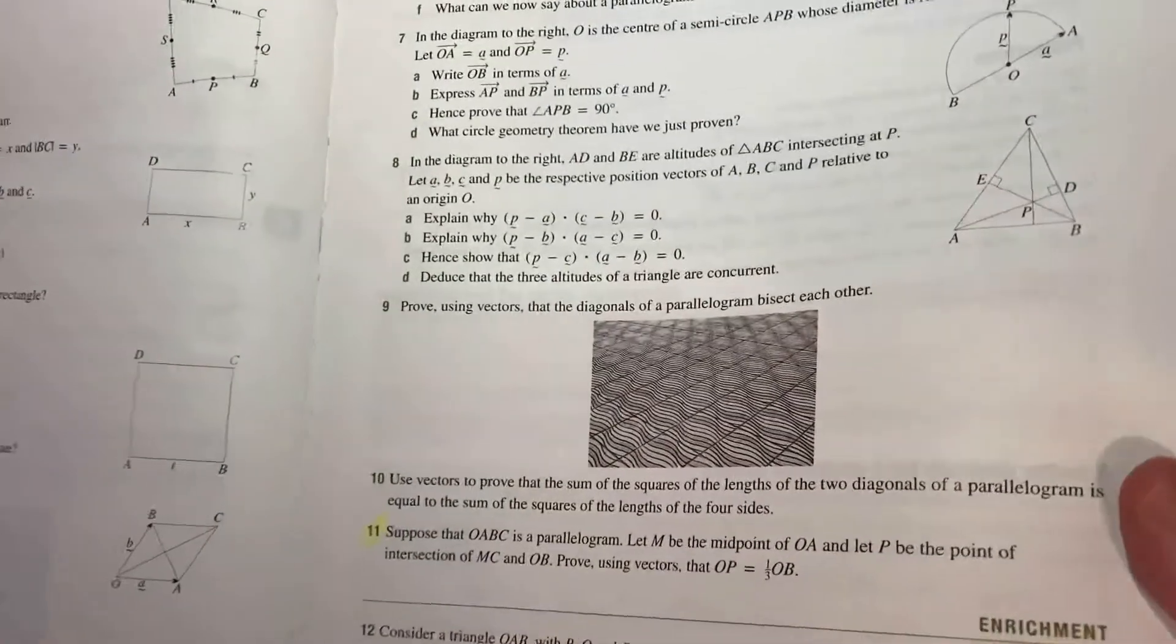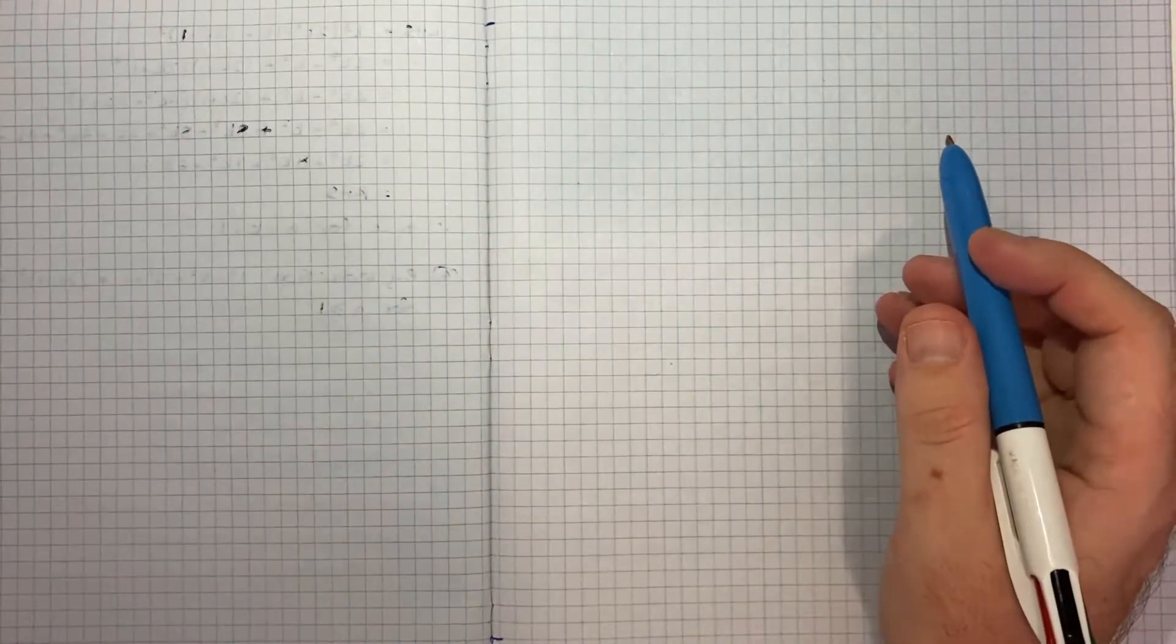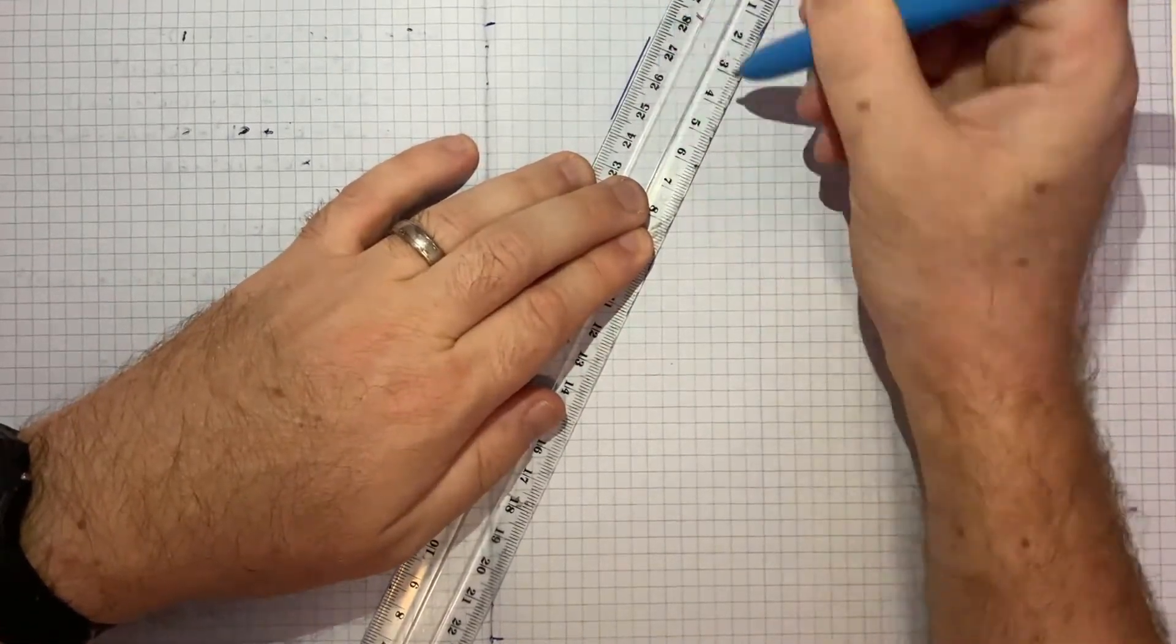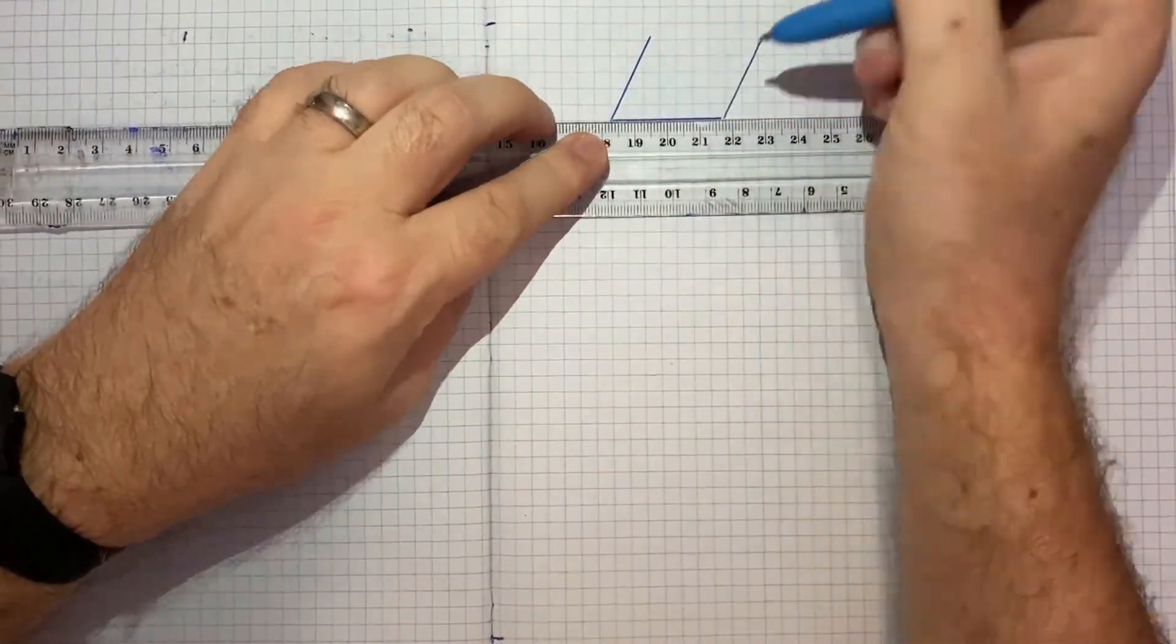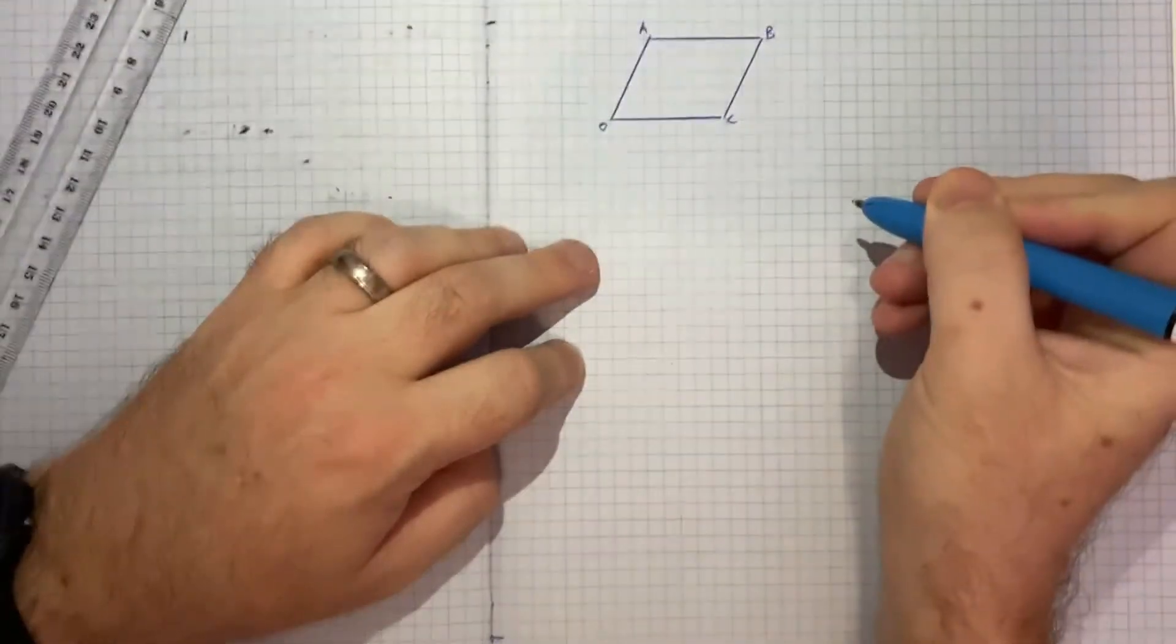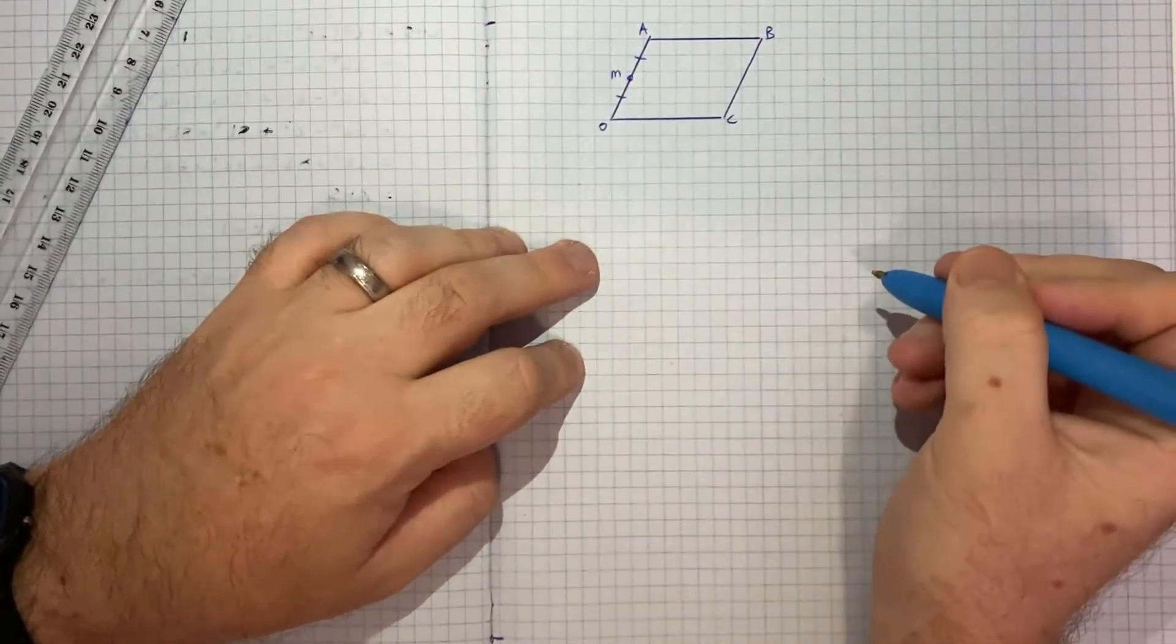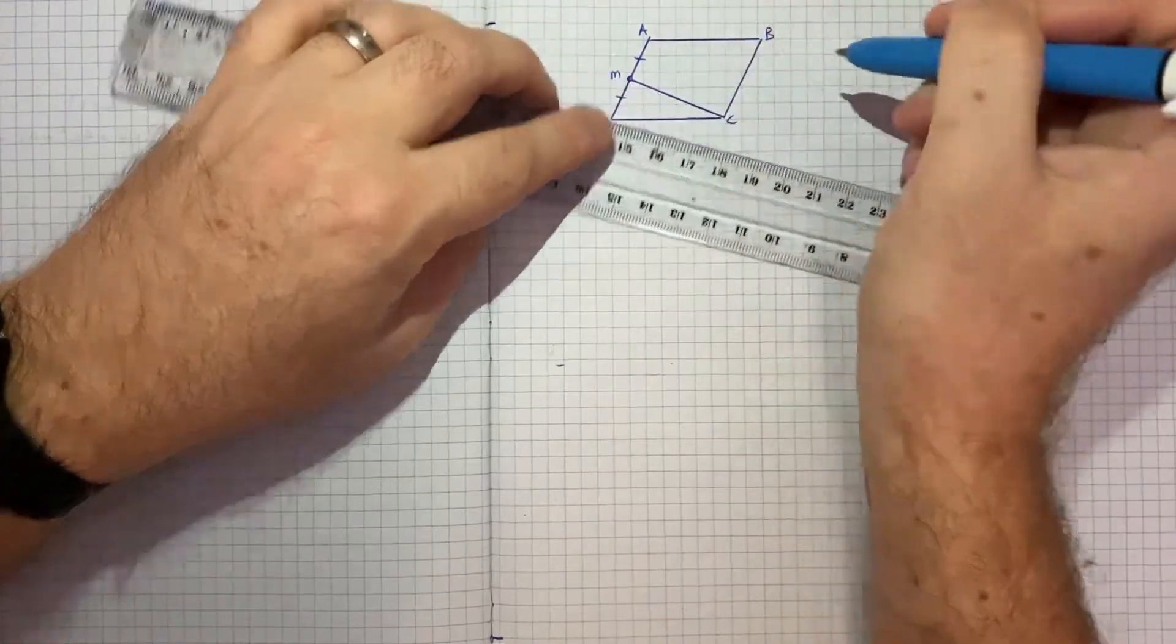I might just put this out of the way and the first thing to do with a question like this will be to draw it up. So I'll maybe use my ruler here to get a parallelogram and we're told that this parallelogram will be O, A, B, C. We're told M is the midpoint of OA and we're told that the point P is the intersection of MC and OB.